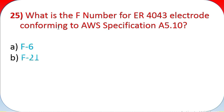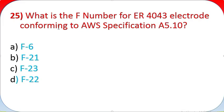Question 25: What is the F number for ER4043 electrode conforming to AWS specification A5.10? A - F6, B - F21, C - F23, D - F22.